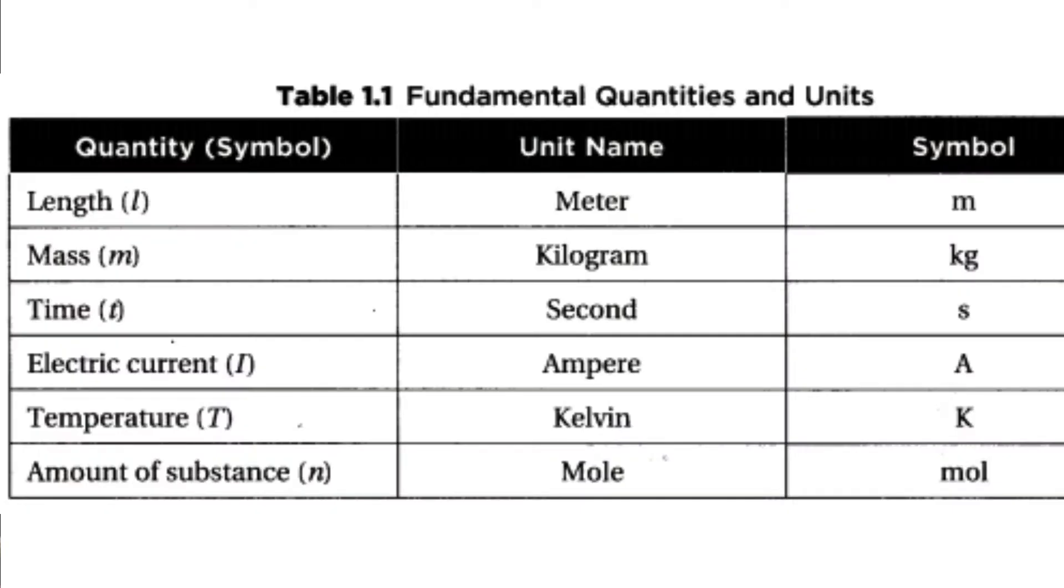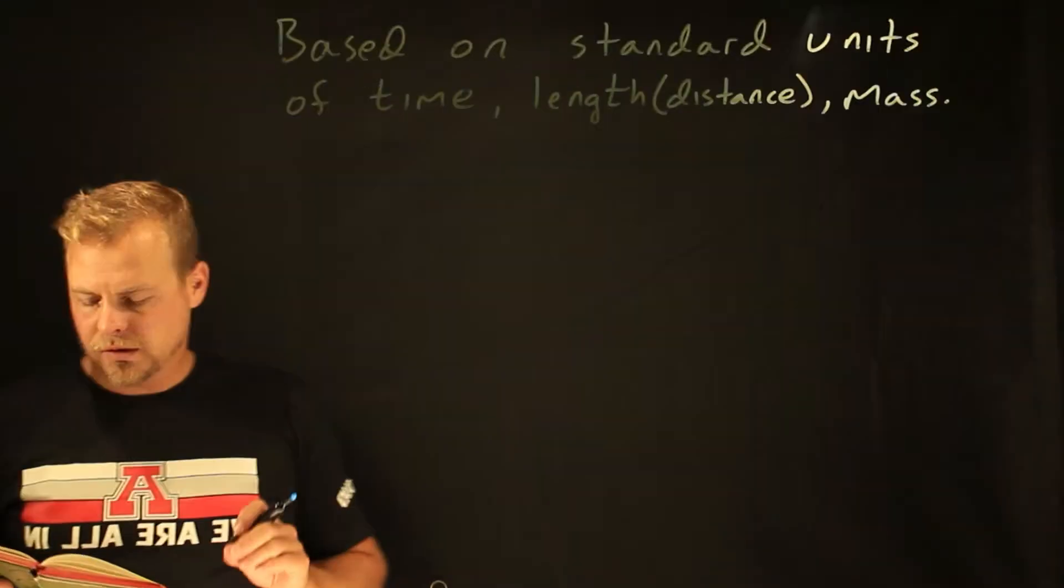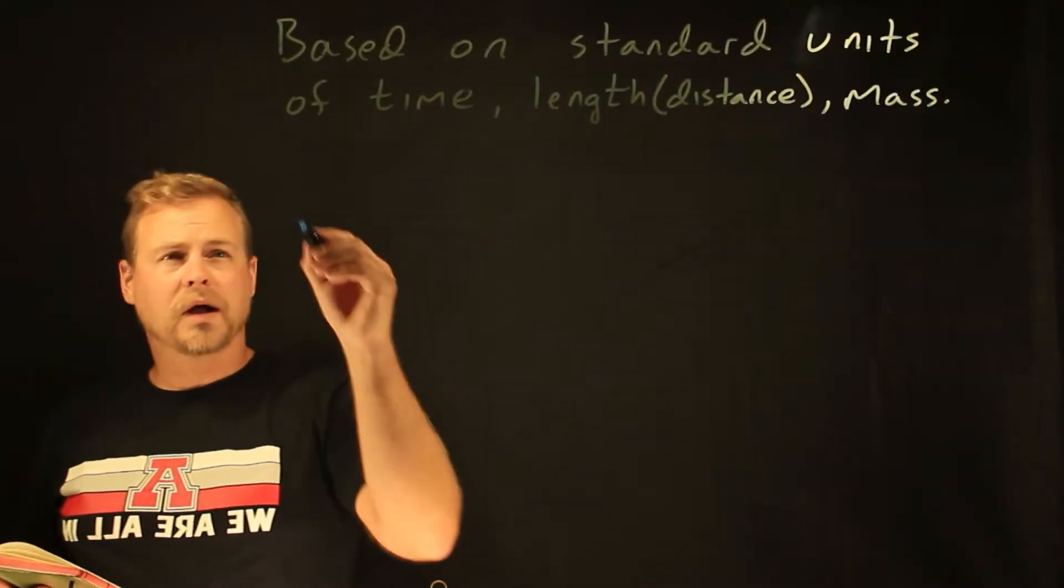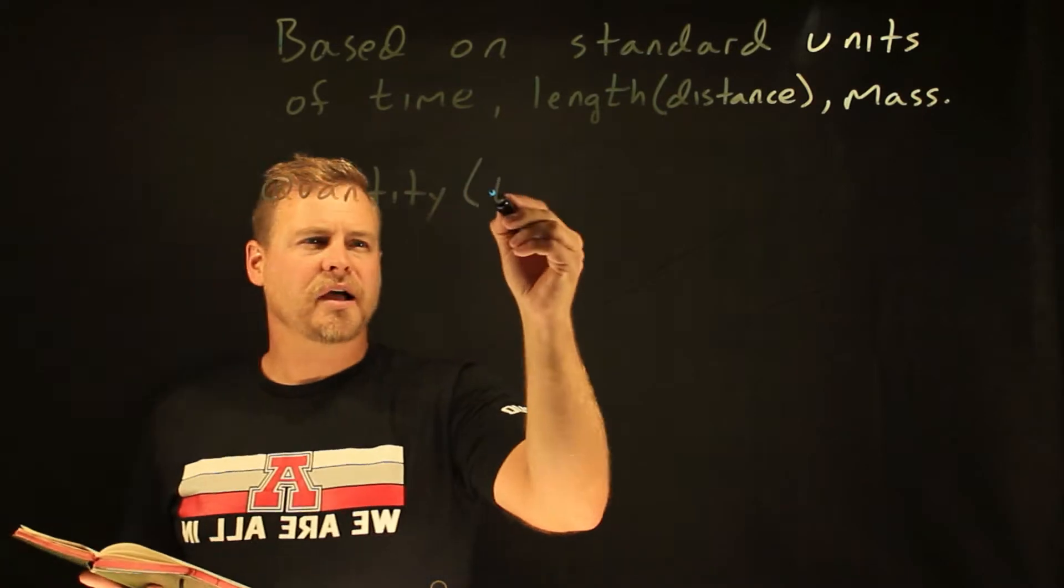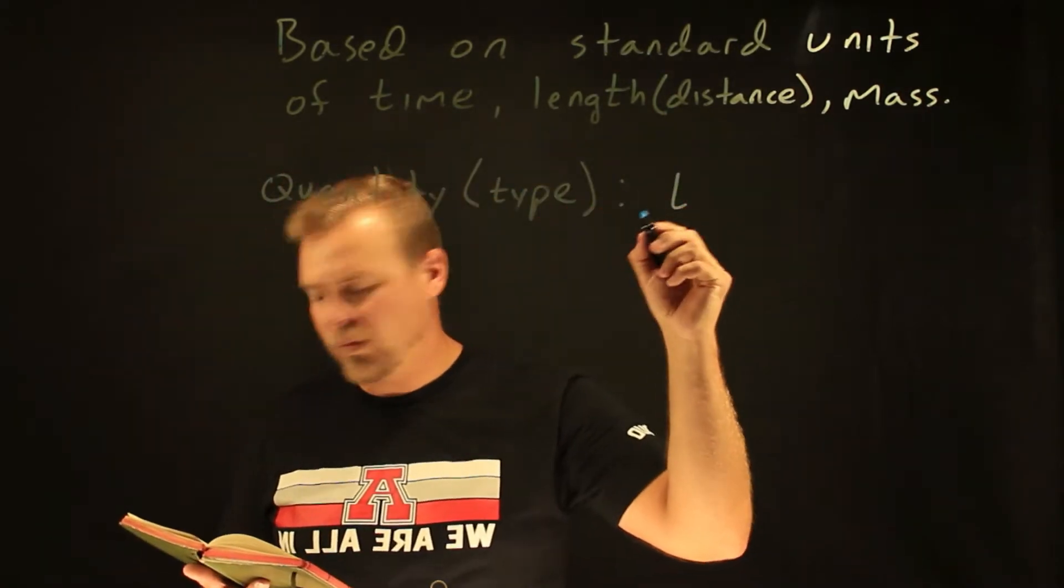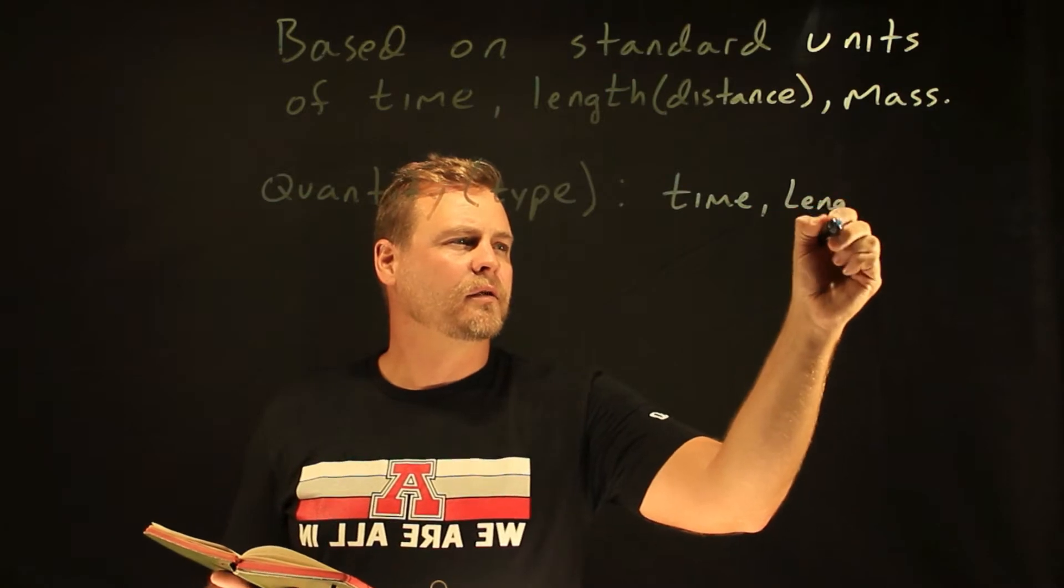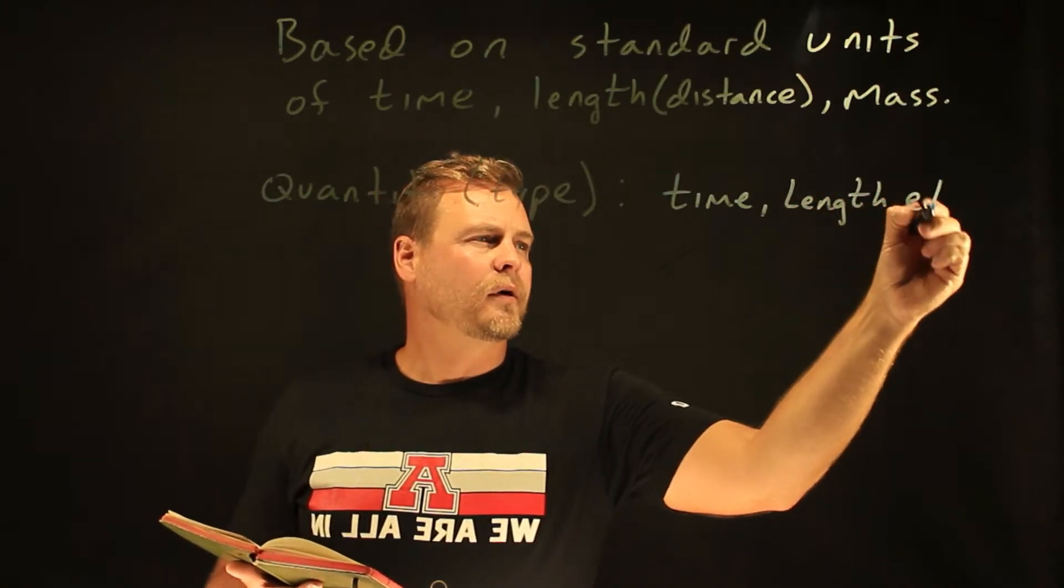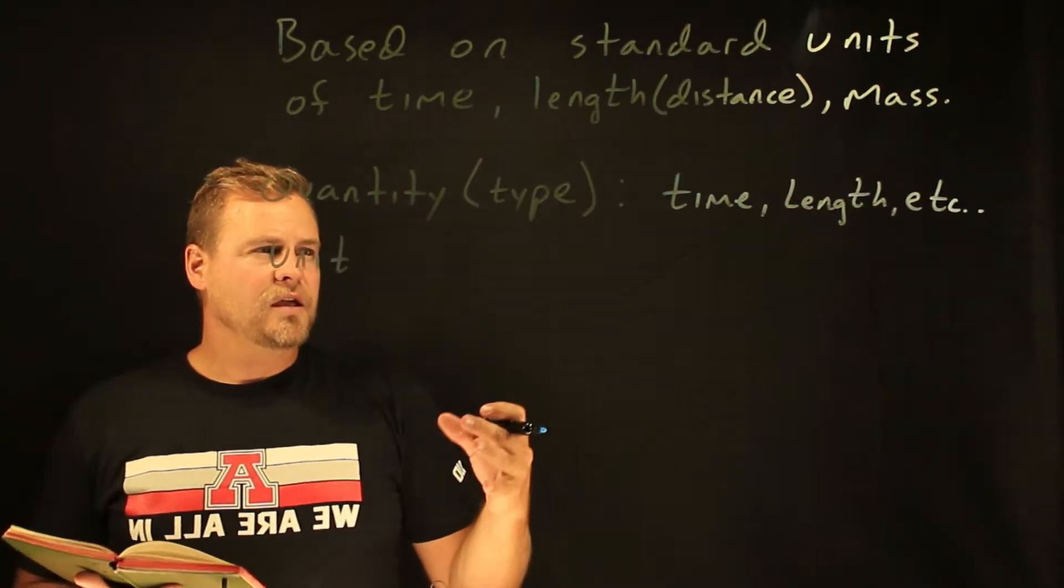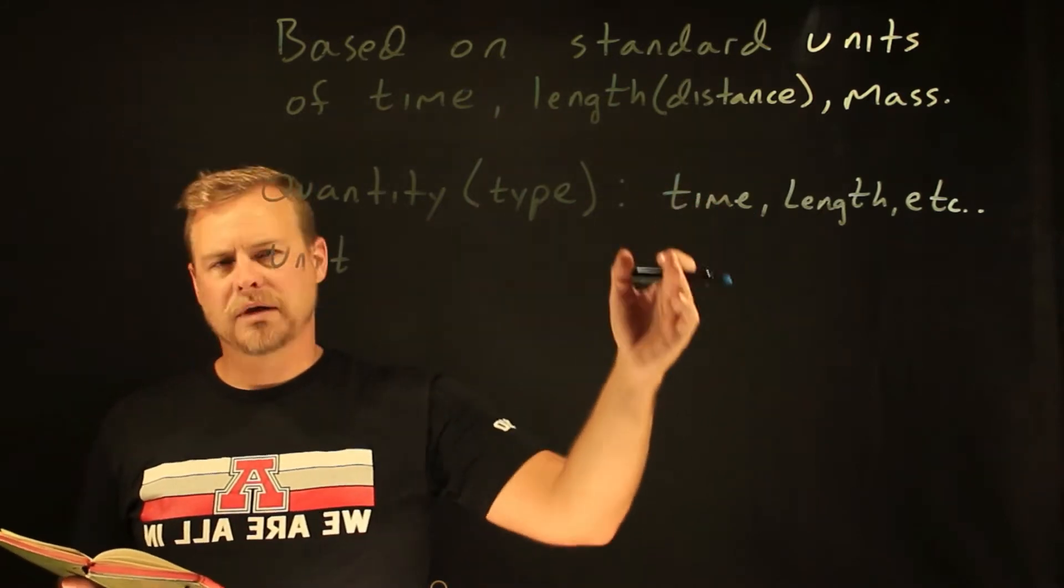Quantities, the units, the abbreviations, and the variables. These are all very different things and you need to be careful about exactly what it is you're looking at. So your quantity, the name of what it is that you're doing. So time, length, etc. Unit. This is the thing that you're measuring time in.